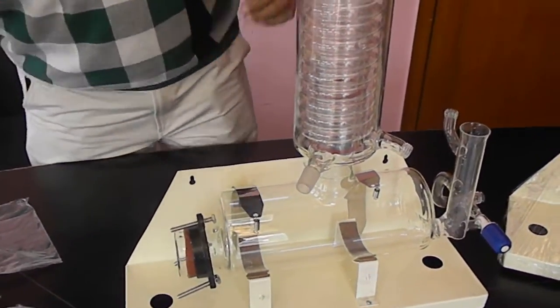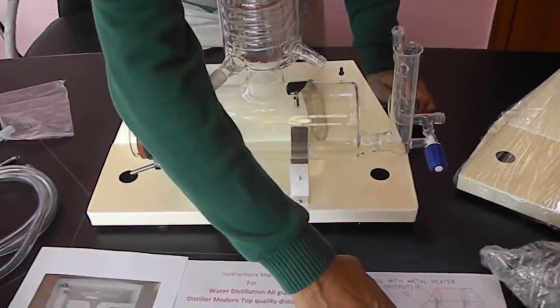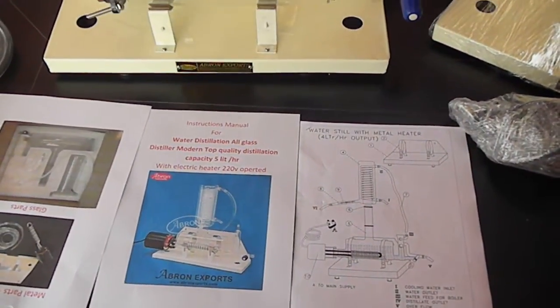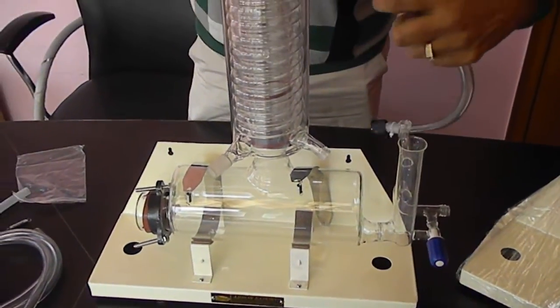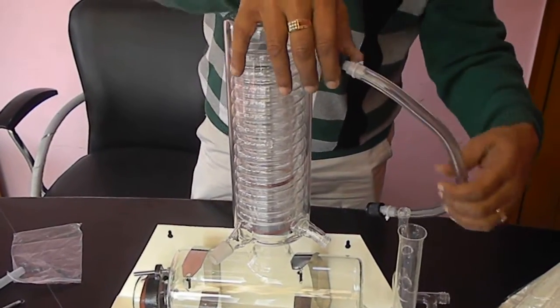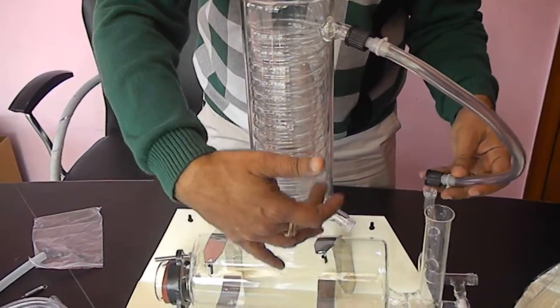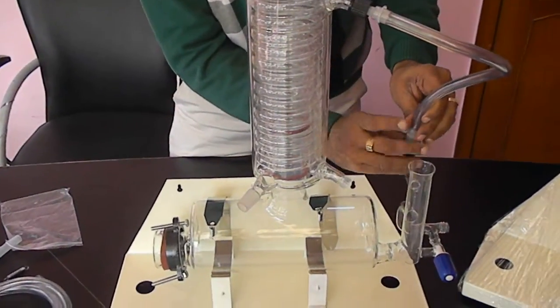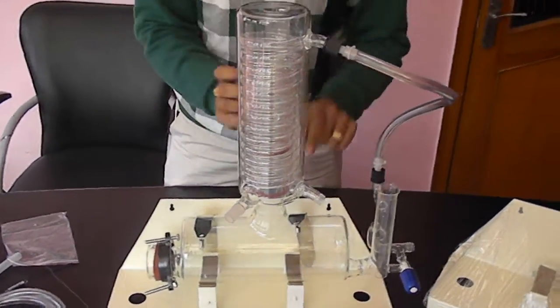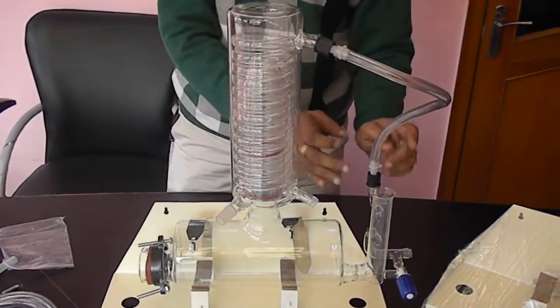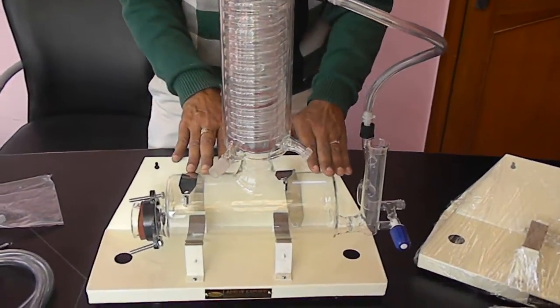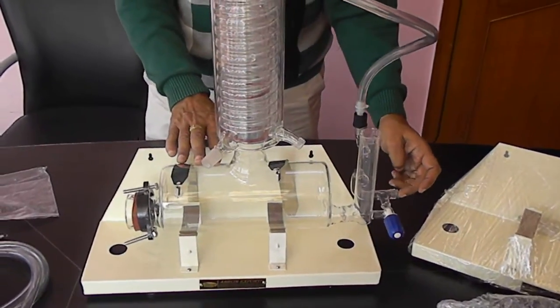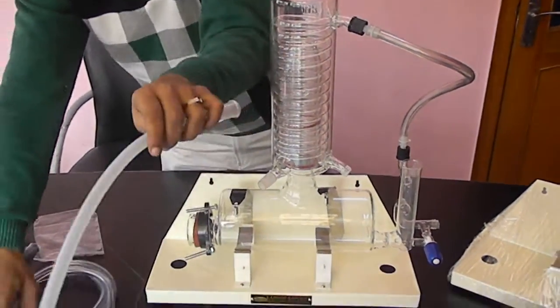Then there is number seven which goes from top to the bottom. You have to connect this. Cold water goes from here, comes here. Hot water comes here and then goes to this part, so that the hot water comes to the chamber and the level is automatically maintained. Extra water comes out through this.